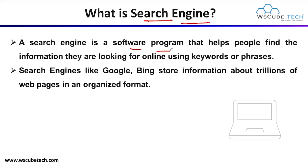A search engine is a software program that helps people find the information they are looking for online using keywords or phrases. Examples of search engines are Google, Bing, and Yahoo. You can use these search engines to find any particular information you want.